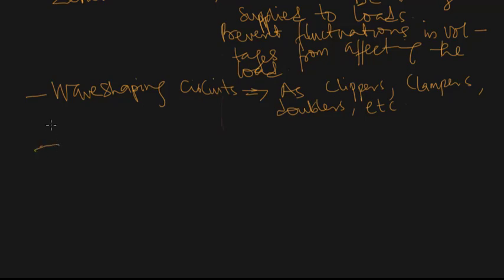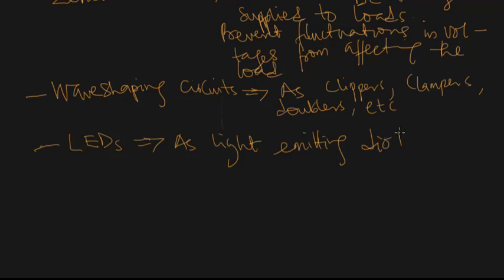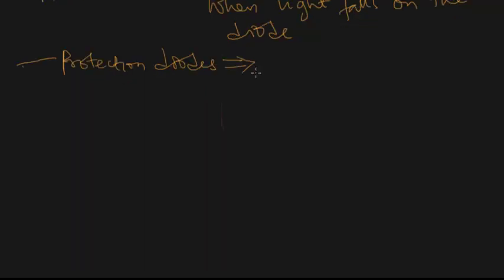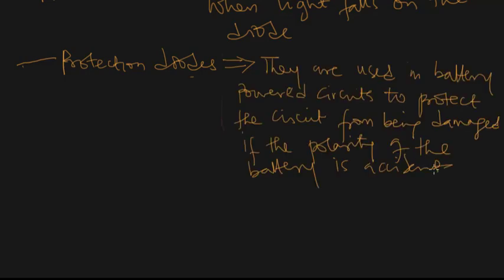We also have other applications of diodes which include LEDs — light emitting diodes that emit light. We have photodiodes which produce electric current when light falls on the diode. And then we have protection diodes, which are used in battery-powered equipment to protect the circuit from being damaged if the polarity of the battery is accidentally reversed.